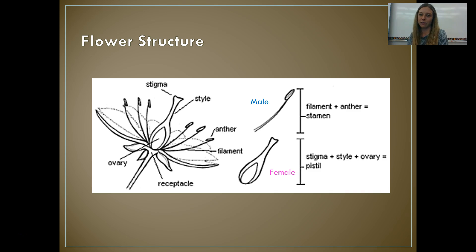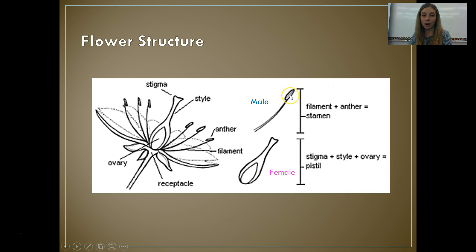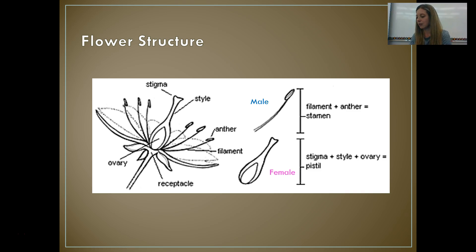The stamen is the male portion of the flower; the pistil is the female portion — you can remember it as "that girl is as fiery as a pistil." The stamen is made up of the filament and the anther, which has the pollen — the pollen is like the sperm of a flower. The female portion, the pistil, is made of the stigma (the sticky part at the top — sticky so pollen will land on it), then the style (a little tube), and then the ovary where the eggs are.